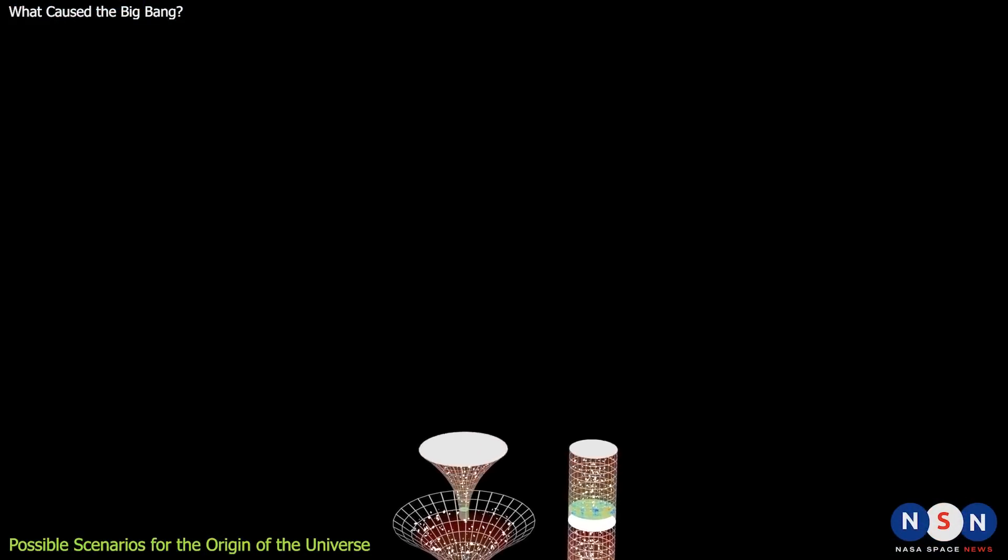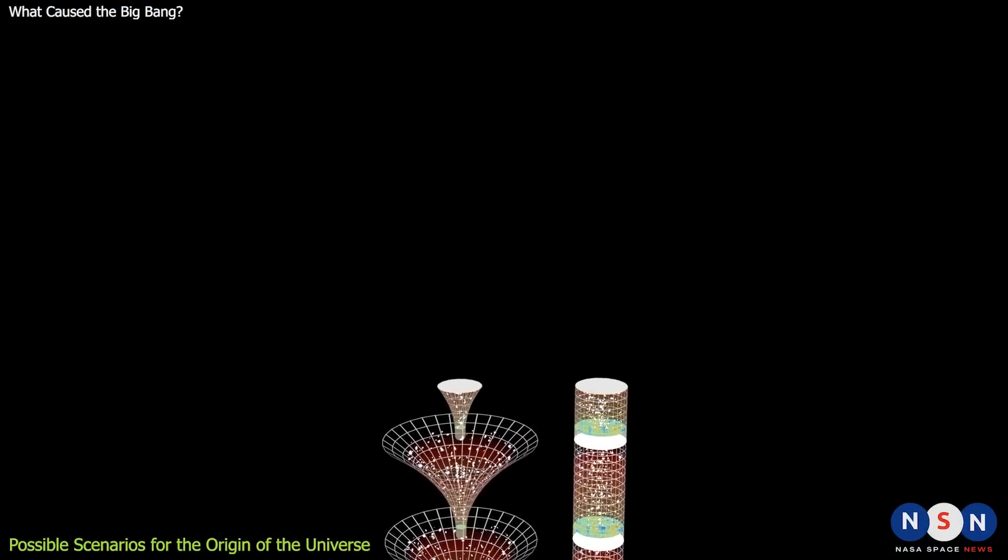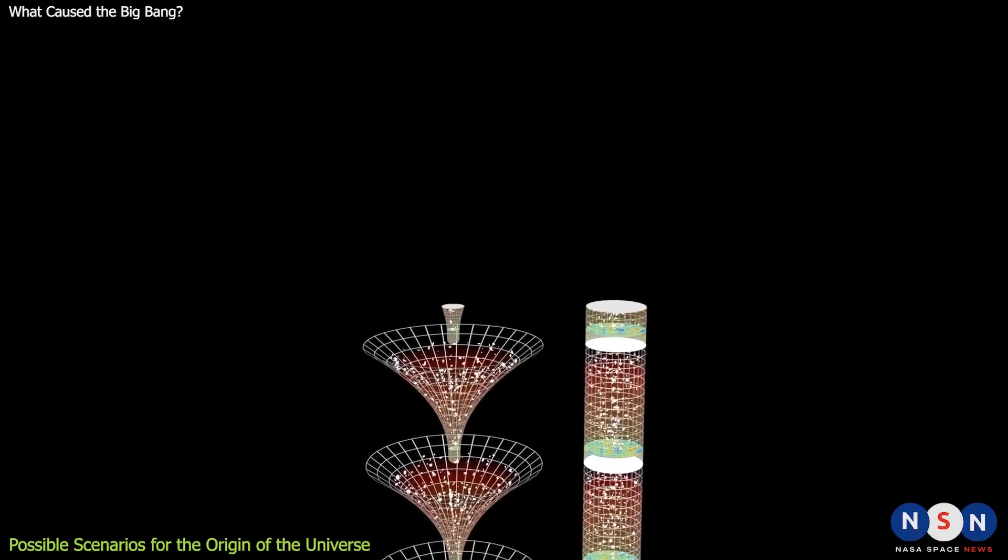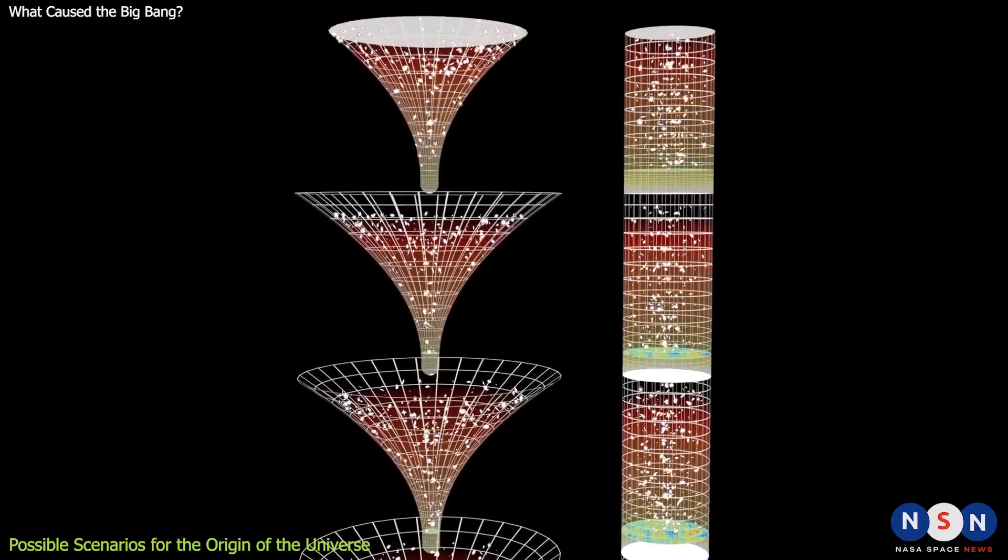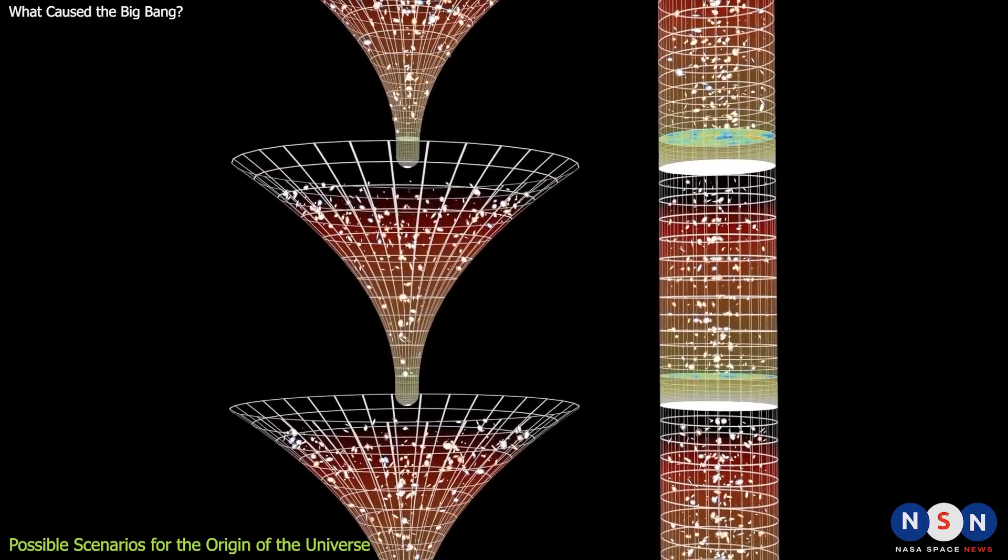Another possibility is that our universe is cyclical, meaning that it goes through phases of expansion and contraction over and over again. Perhaps our Big Bang was just one of many Big Bangs that happened in an endless cycle.